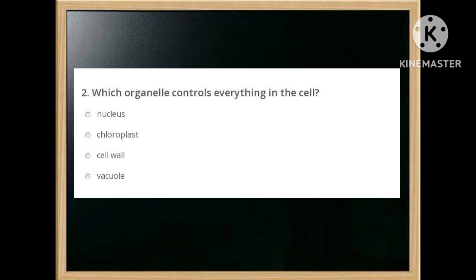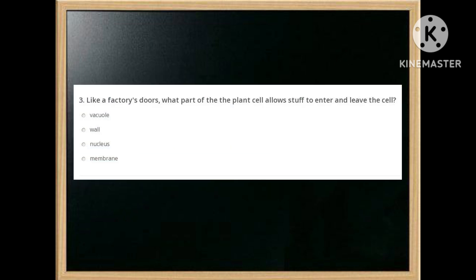Which organelle controls everything in the cell? The answer is: nucleus. Like a factory's door, what part of the plant cell allows stuff to enter and leave the cell? The answer is: membrane.